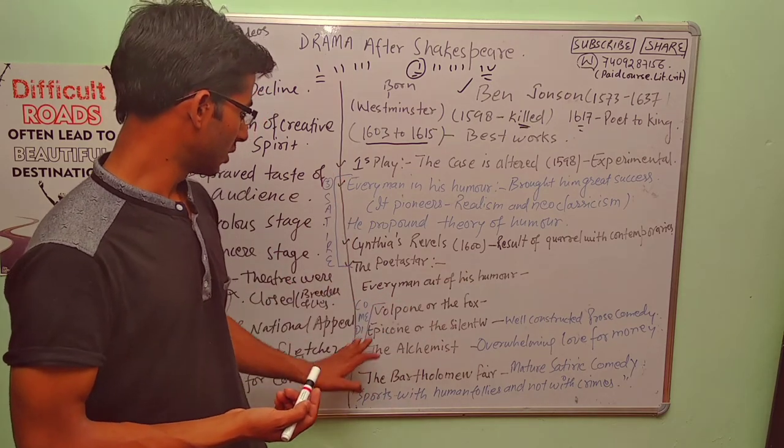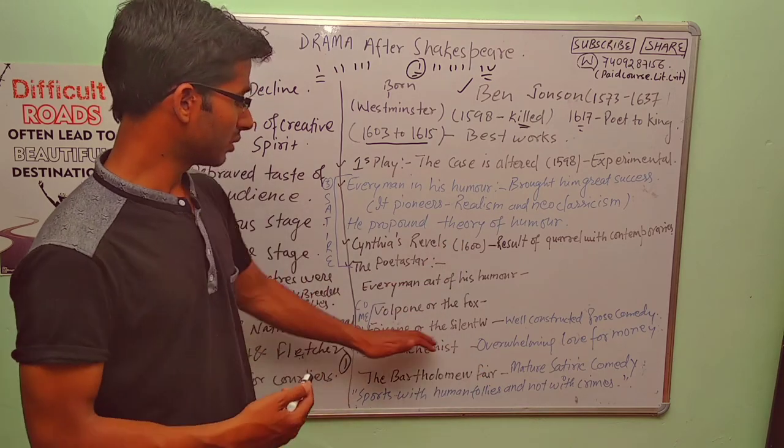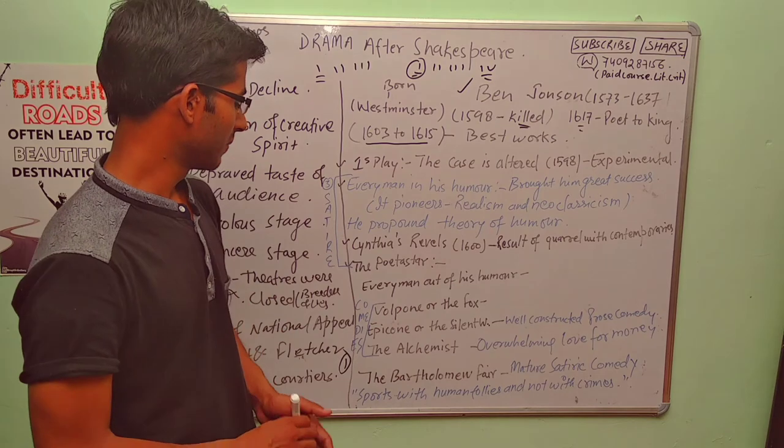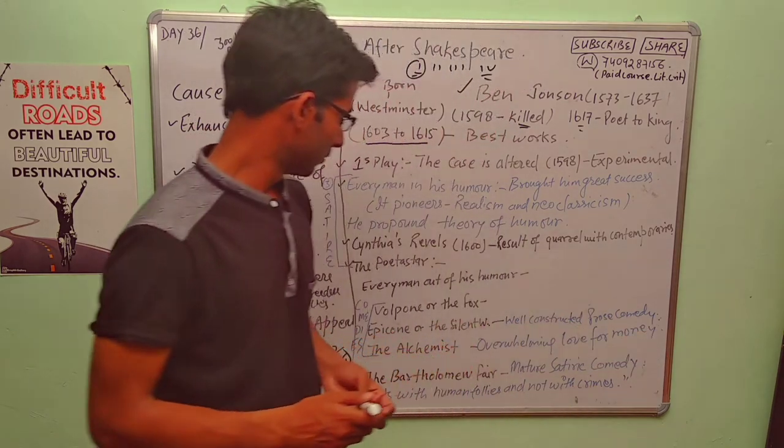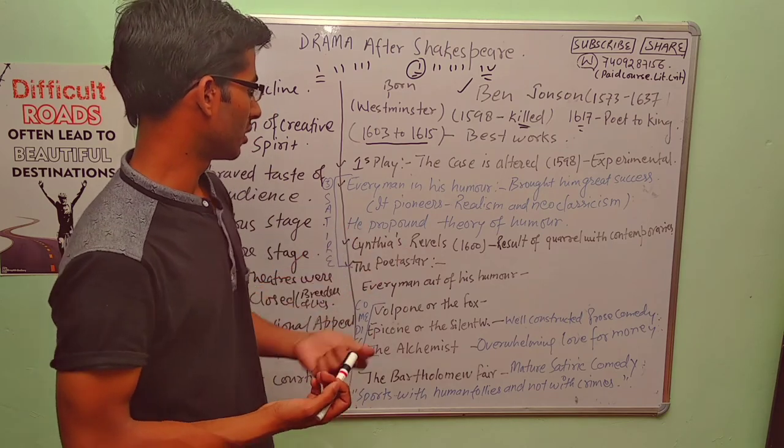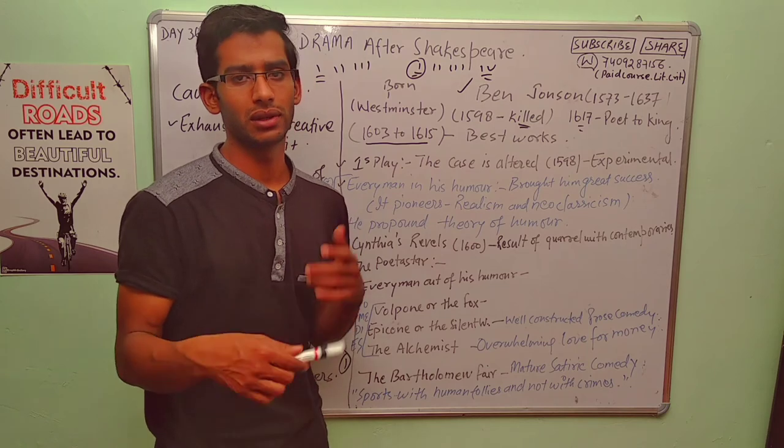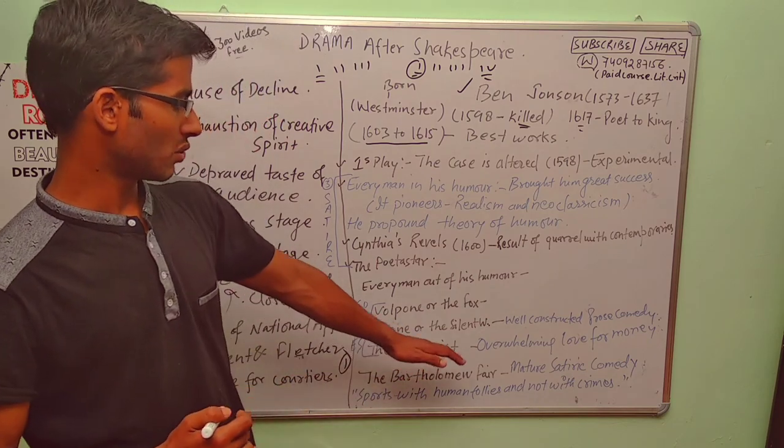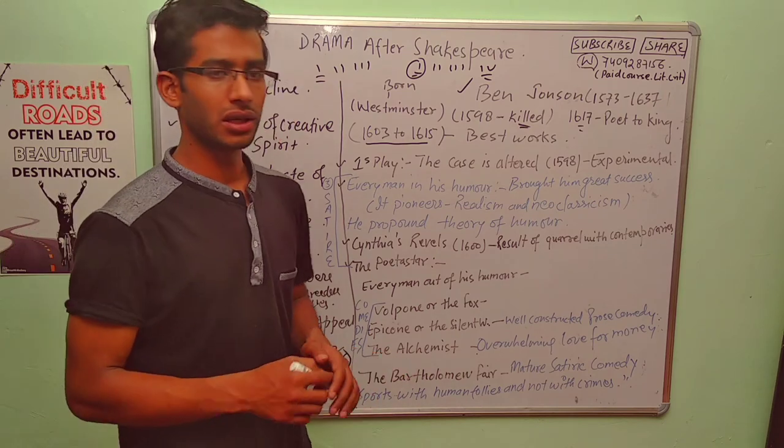Now let's come to the Everyman Out of His Humour and Volpone or The Fox. You can get summaries of these works on my channel. Epicoene the Silent Woman. It was well constructed prose comedy. So this was prose comedy. This is important to remember. Sometimes these questions are asked, which is the prose comedy by Ben Jonson. Sometimes it is asked that in which work he propounds his theory of humor. So which work was result of quarrel with contemporaries. The Alchemist was overwhelming love for money. So this was the theme of the work.